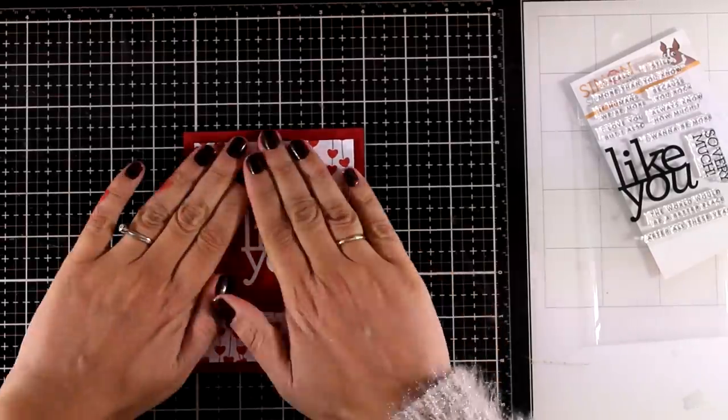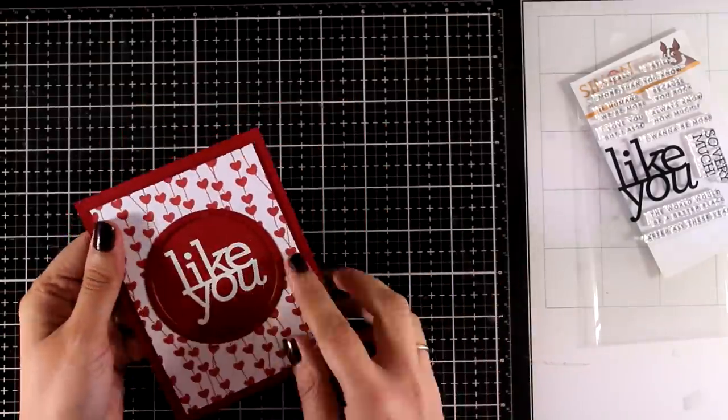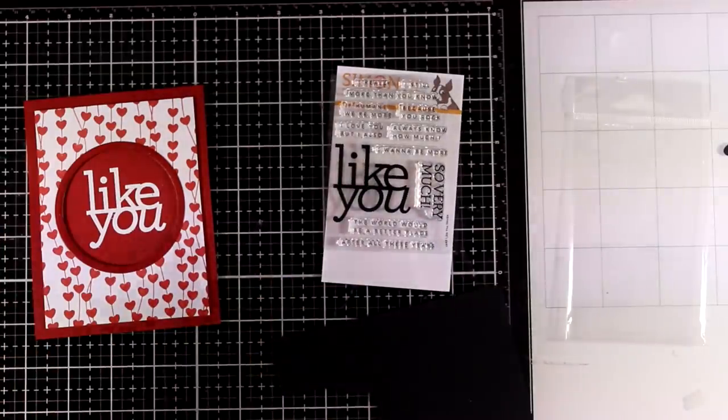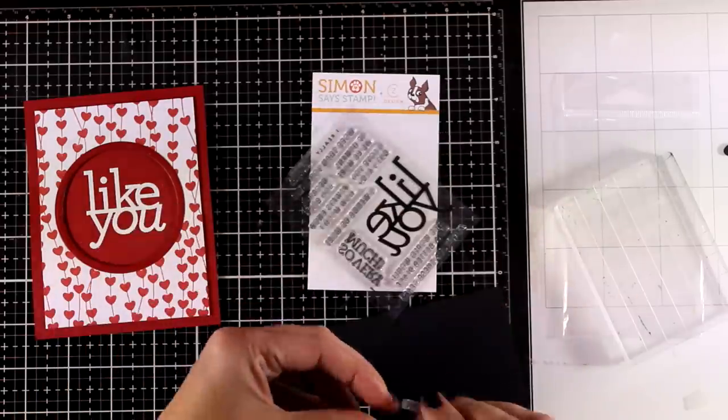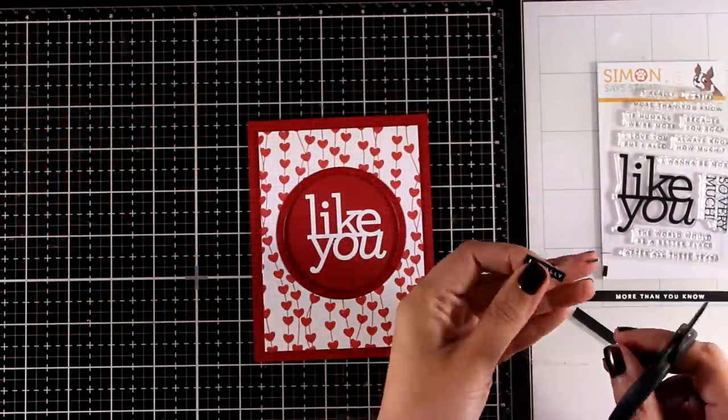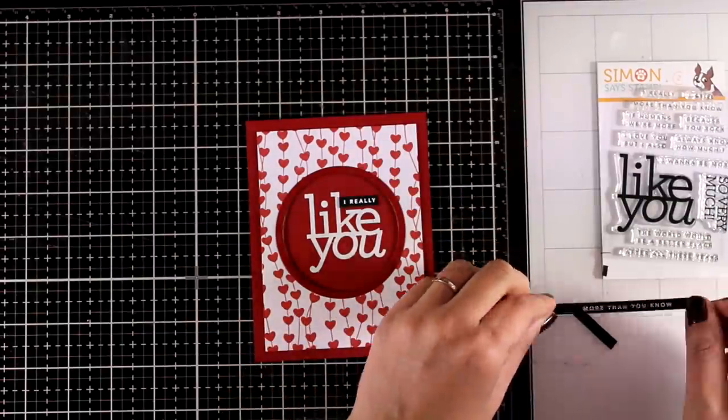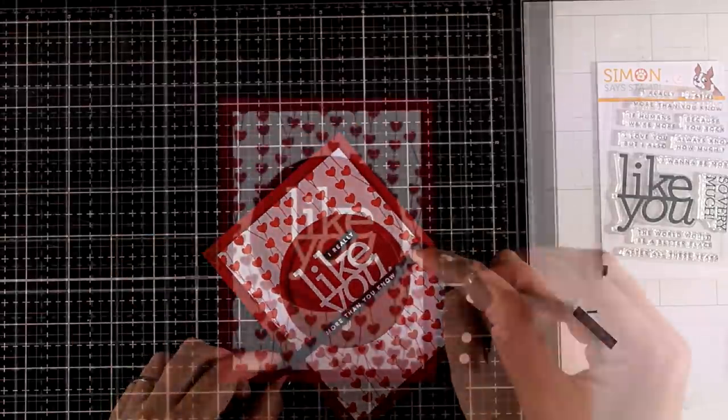So now I'm going to place the panel on top and I will use foam tape at the back to stick it down so it is slightly raised. And now I'm going to use two more stamps from this stamp set. I'm going to emboss them with white embossing powder on black cardstock and I end up having this tiny little one that says I really and another one that says more than you know. So the whole sentiment reads I really like you more than you know.